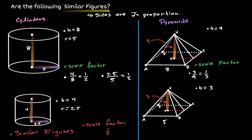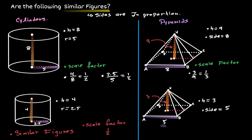Now let's compare another side of these two pyramids and see if we also get 1 third. Notice that on the pyramid on top, one side of the base has a value of 8, and the same side on the other pyramid holds a value of 5. When we compare those two sides, we get 5 over 8, which is not equivalent to the scale factor we got when comparing the heights. Because these two values do not match up, we conclude that these two pyramids are not in proportion — therefore, these two figures are not similar.